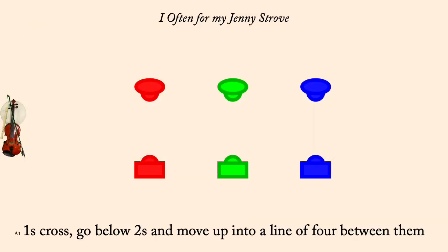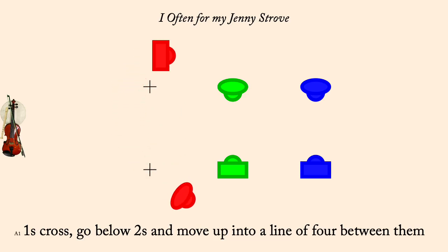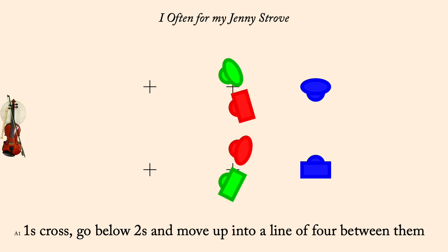Ones cross, go below twos, come up and form a line of four between them. Line of four, up a double, fall back, bending the line.